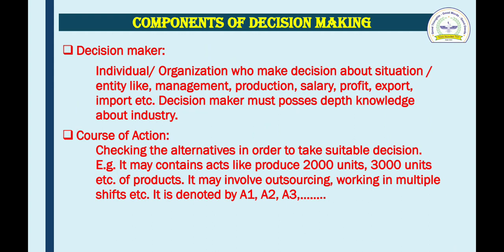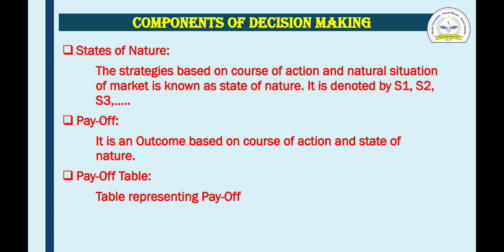Number three: state of nature. State of nature is the strategies or outcome based on course of action and the natural situation of the market. First, we choose a certain action using course of action, and also check the market situation. For example, if it is a COVID situation, the share market will fall or rise — that is the natural situation of the market. State of nature is denoted by S1, S2, and so on.